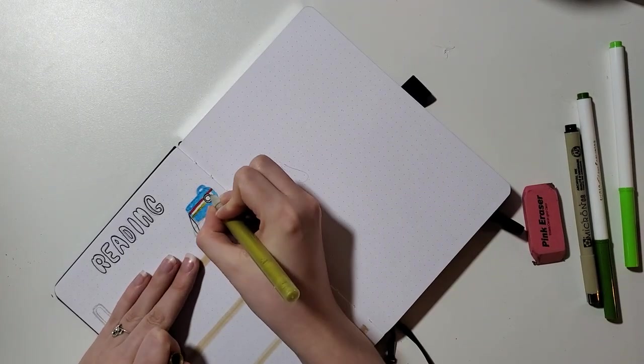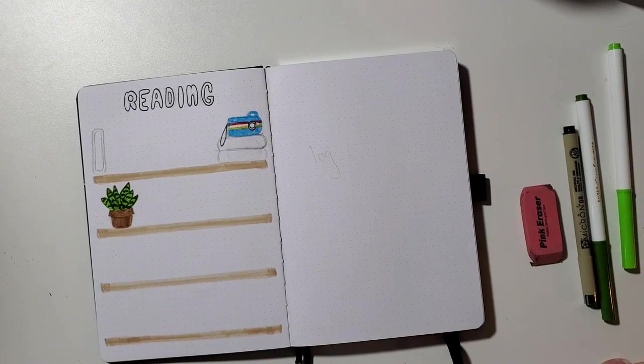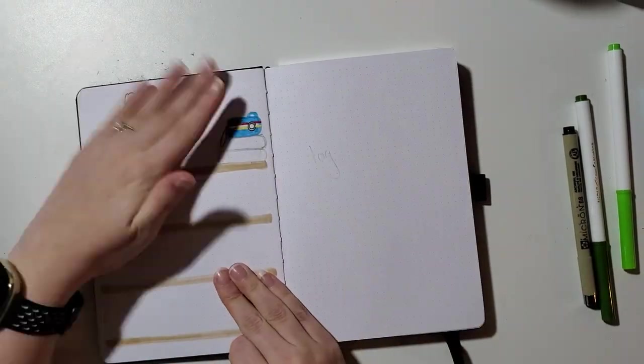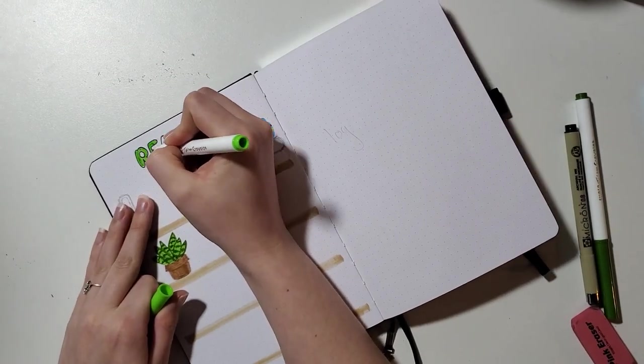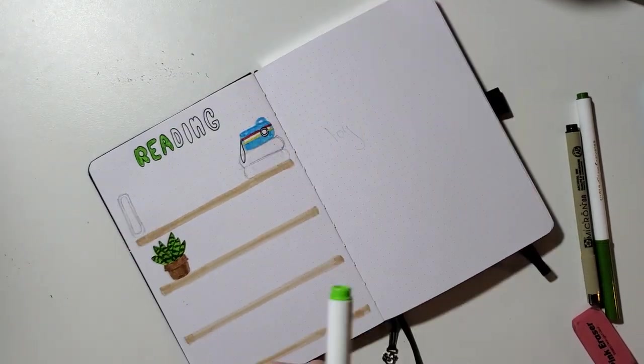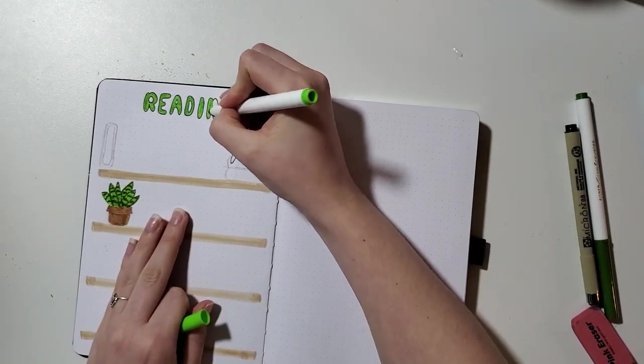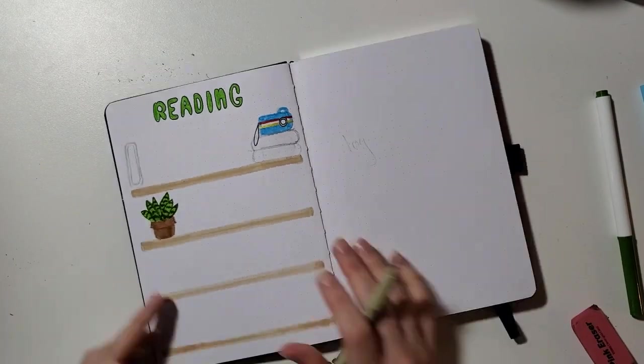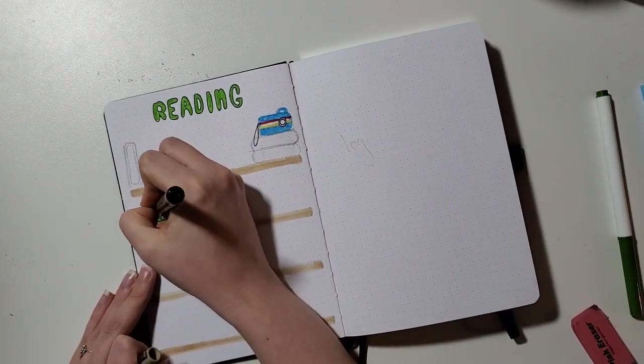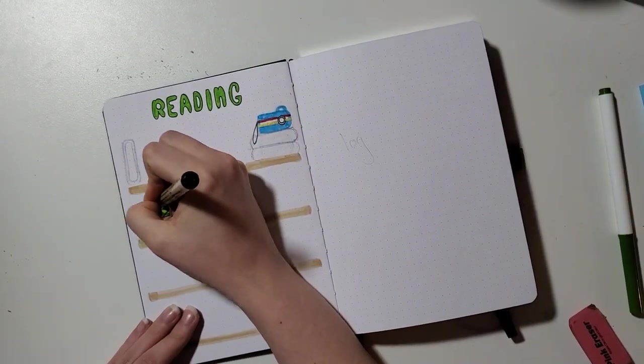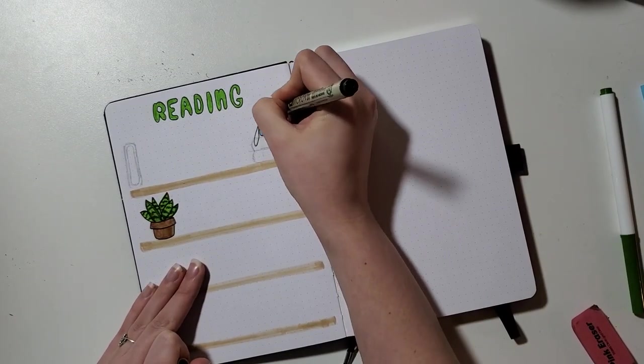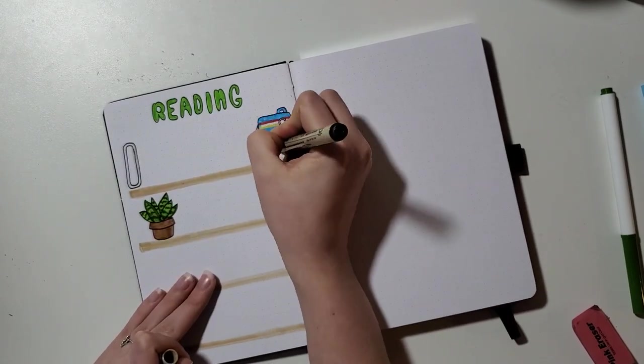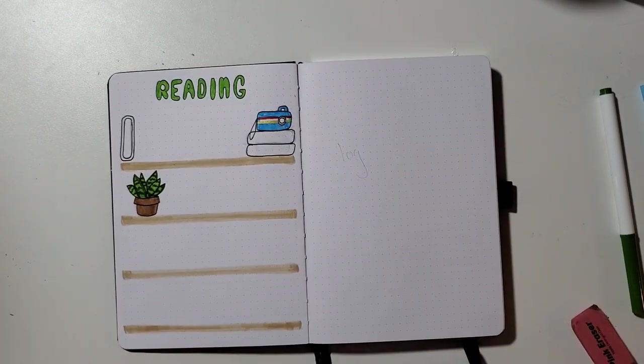I will just draw a little book onto this bookshelf every time I read one and I think I will write the title in there. I'm not going to write author because I also have Goodreads to keep track of all the more detailed stuff. This is just a nice visual representation in my book and I'm not doing a physical list this year.